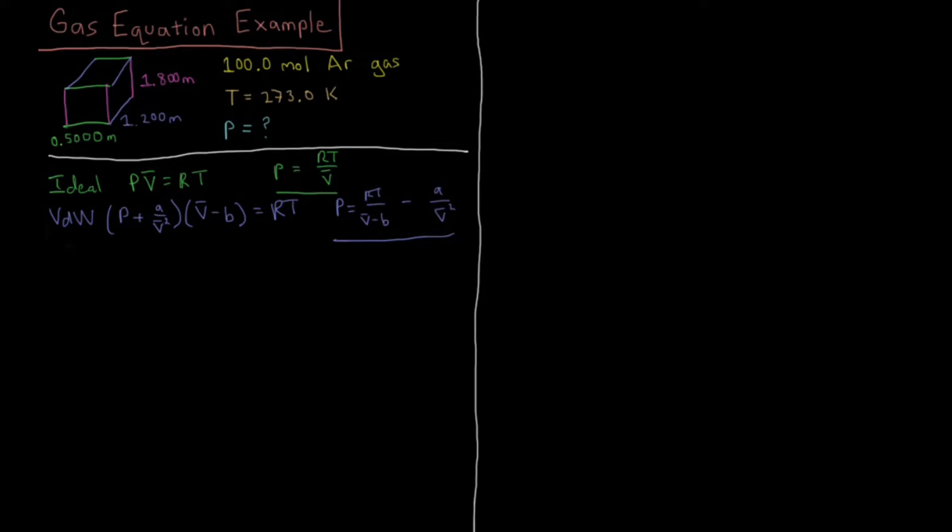First of all, we're going to get our molar volume. Our total volume is the space which the particles have access to. That's 0.500 meters times 1.2000 meters times 1.800 meters, which equals 1.080 meters cubed. That's the SI unit for volume.